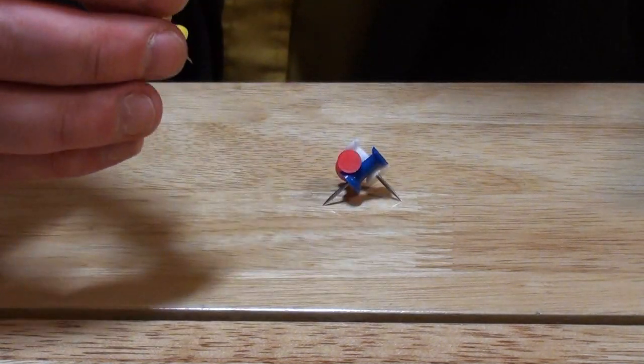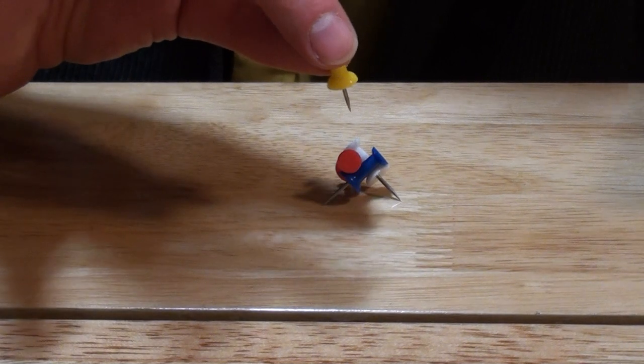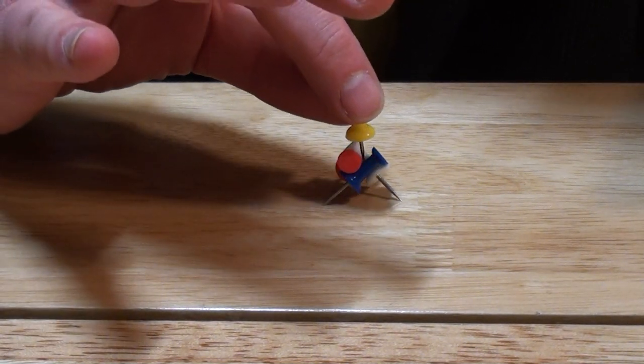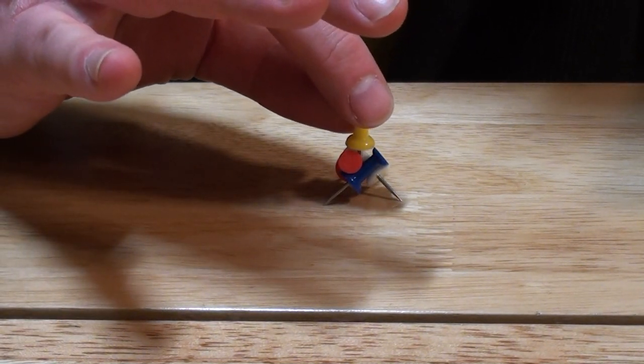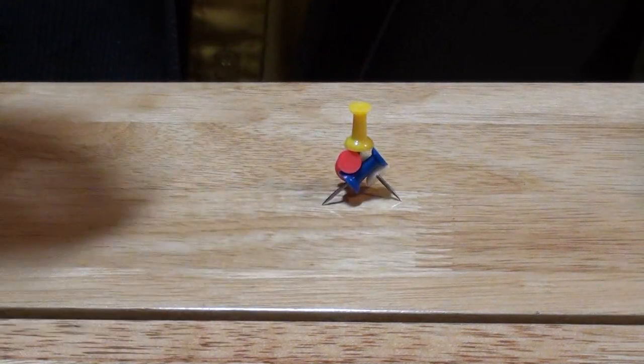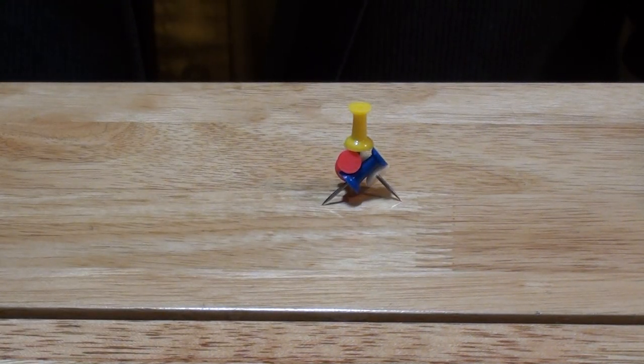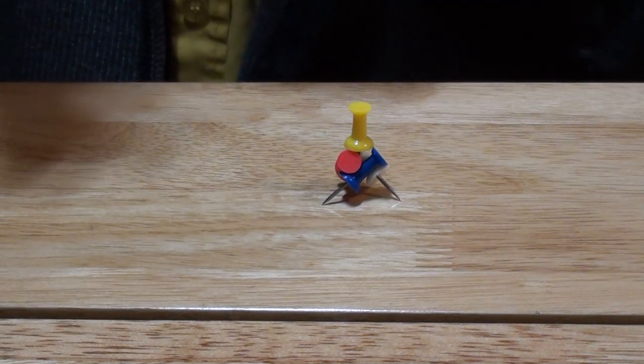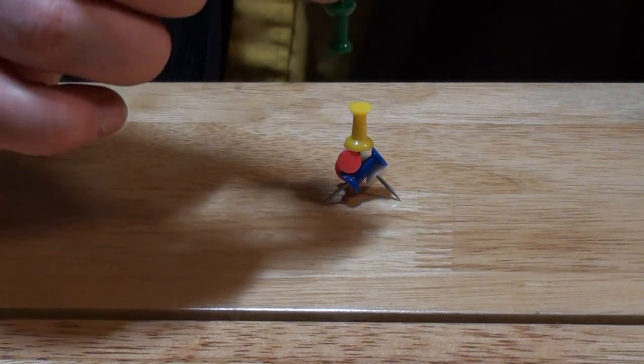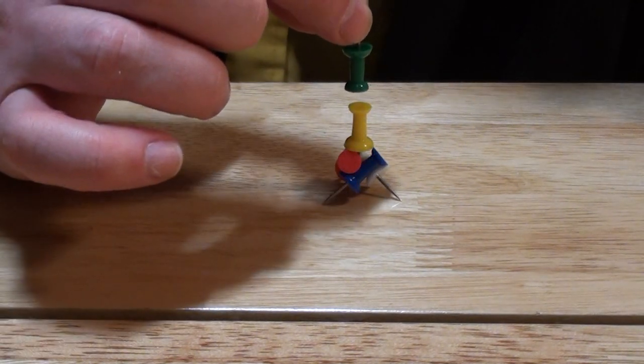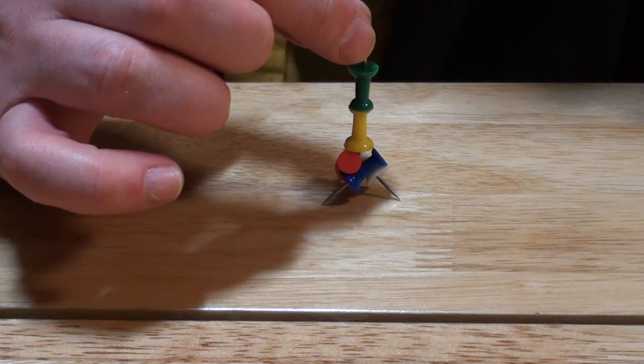For the fourth one, you're going to just put it slowly, like this, on the top of the three other ones. And you get the last move, which is the most difficult. You put the fifth one on the top of everything.